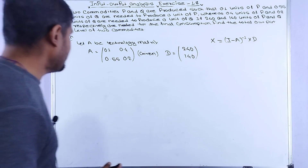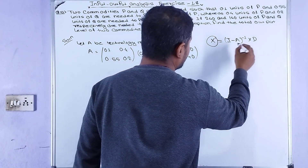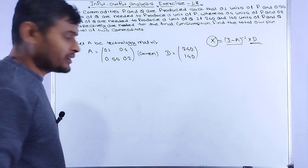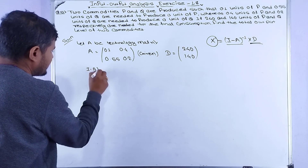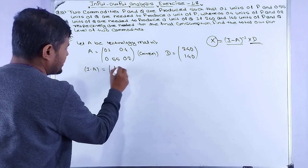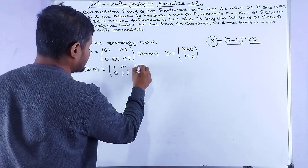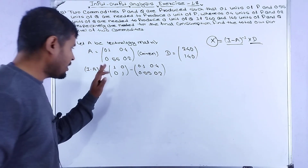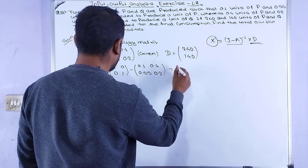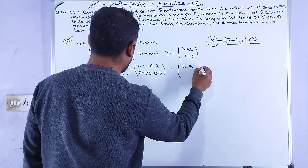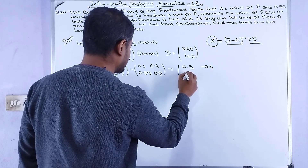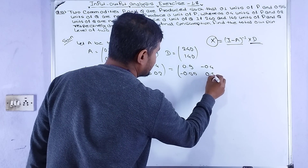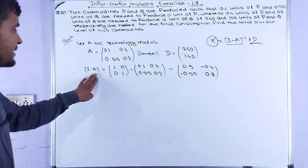To find X (total output), we first calculate the matrix (I - A). We compute I minus A: [1 - 0.1, -0.4; -0.55, 1 - 0.2] = [0.9, -0.4; -0.55, 0.8].